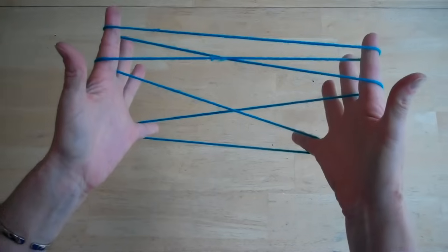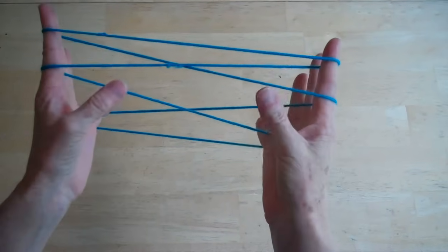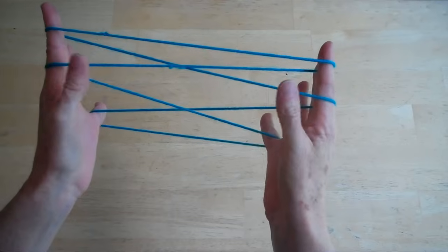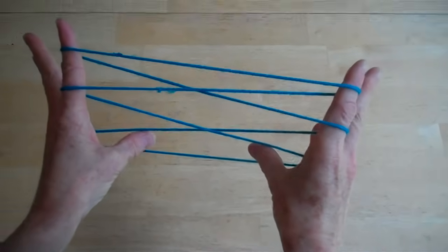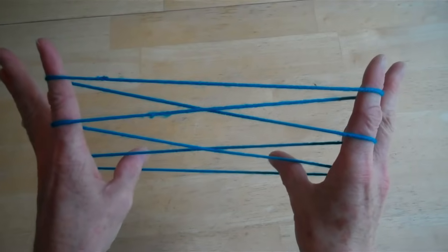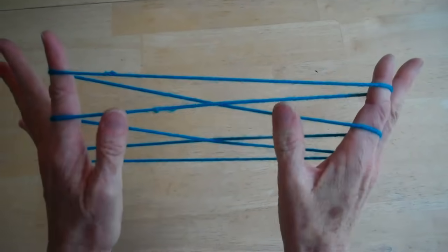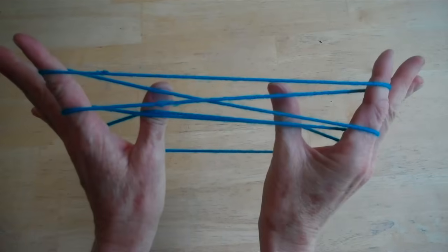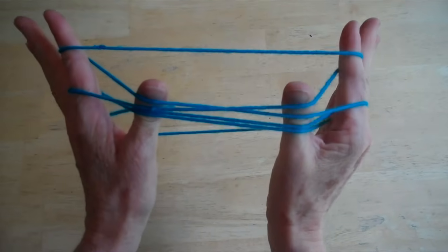Now turn it this way so that you're looking at your hands like that. Take your thumbs that are now free. Come all the way down to this second to last string. Not the bottom one, just above it. We're going to pick up everything in between except for the top one. We're going to come all the way up here like that and pick up everything.